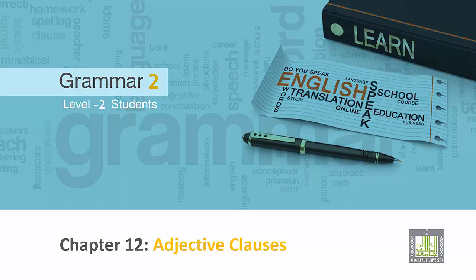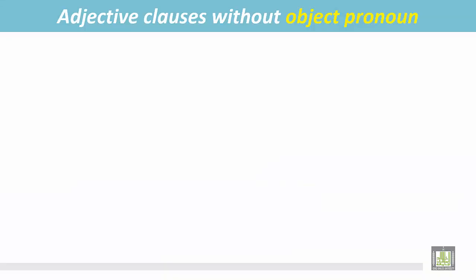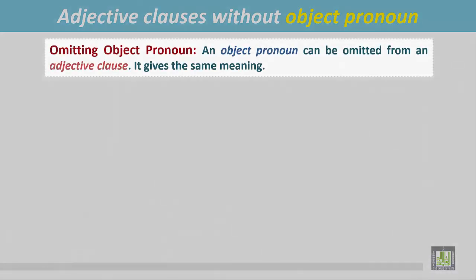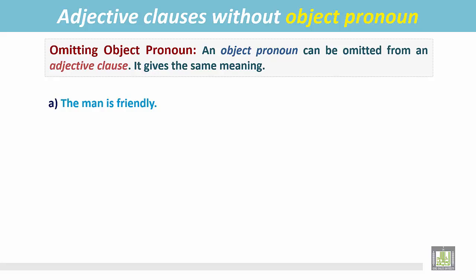Grammar 2 for level 2 students, Chapter 12: Adjective Clauses. This section covers adjective clauses without object pronouns — specifically, omitting the object pronoun. An object pronoun can be omitted from an adjective clause and it gives the same meaning. Let's see an adjective clause.